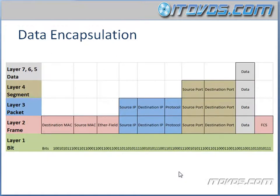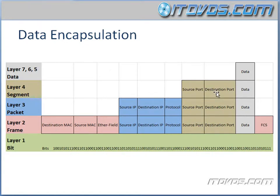So let's take a look at each encapsulation process. At layers 7, 6, and 5, we've just got our data. Then at layer 4, a header is added to this data, and that makes it a segment. It's going to have a source port and a destination port. For example, if I was making an HTTP request, the destination port would be port 80, and the source port would be a port over 1024 selected by TCP. The bottom line is a source port and a destination port are added to our data, and that makes it a segment.